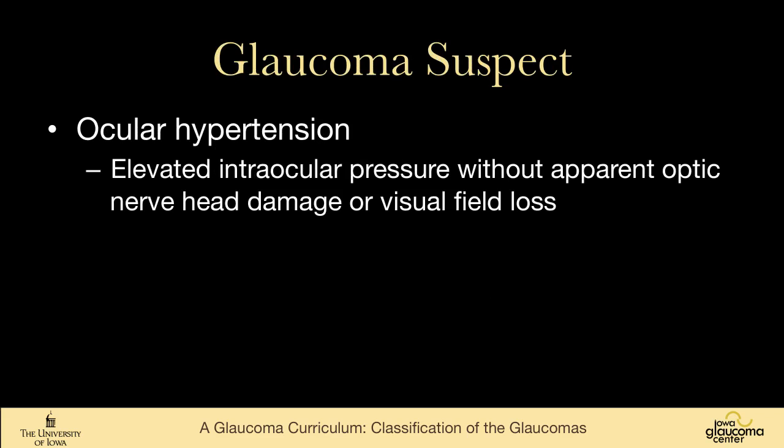We also have people who are glaucoma suspects — who don't have glaucoma but we're watching them for it. Ocular hypertension means that the intraocular pressure is outside of the normal range without apparent optic nerve head damage or visual field loss. These are people who are at risk for glaucoma but don't have glaucoma, and we'll have a whole section on ocular hypertension.